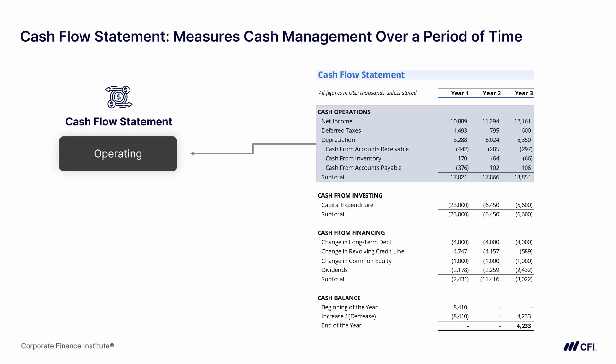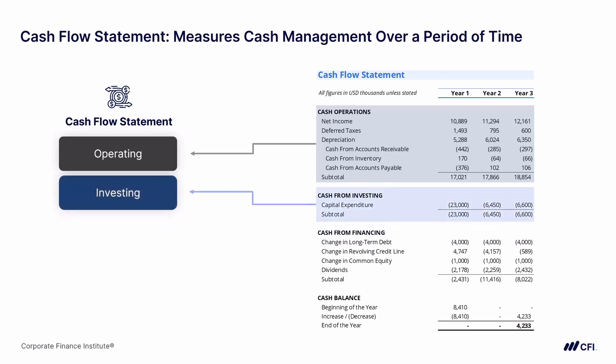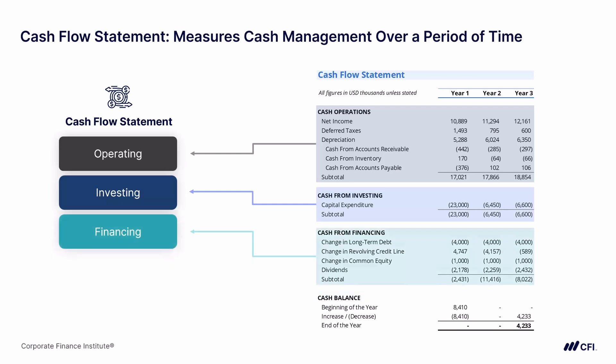The next section on the cash flow statement is cash from investing. It's typical to see this section as negative cash flows as the company is investing in its property, plant, and equipment. And finally, the third section of the cash flow statement is cash from financing. Here we see cash inflows or outflows due to changes in the company's capital structure, like changes in debt or changes in equity.